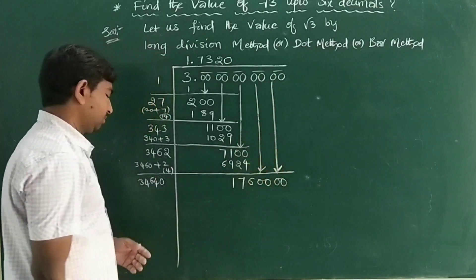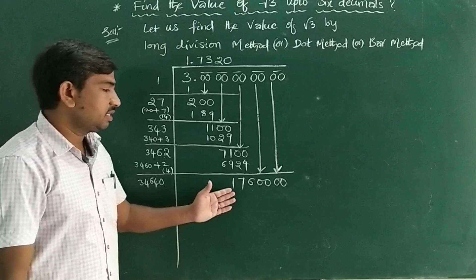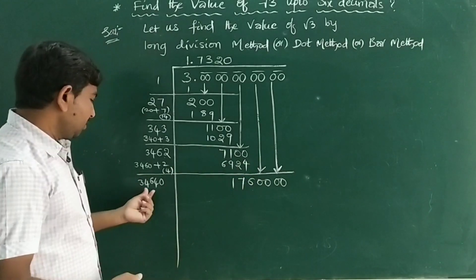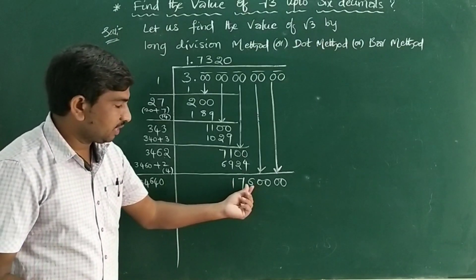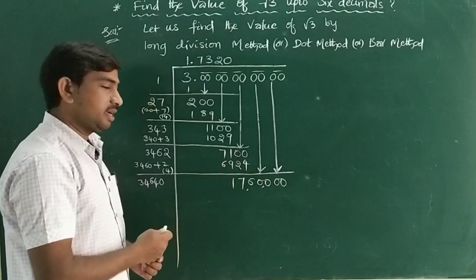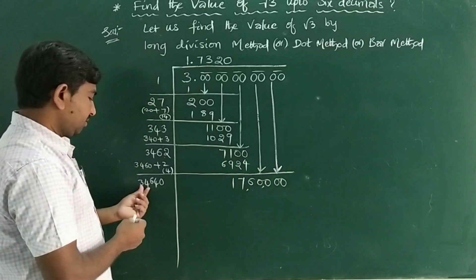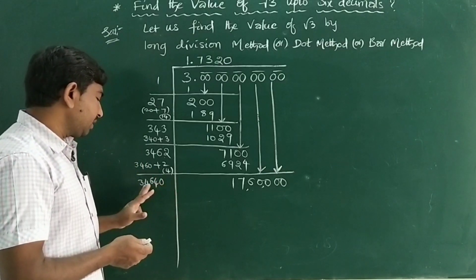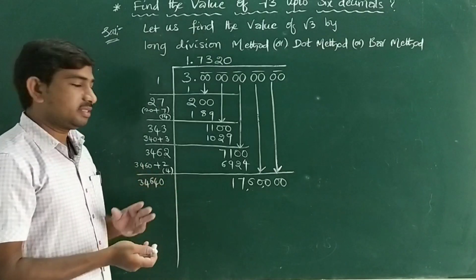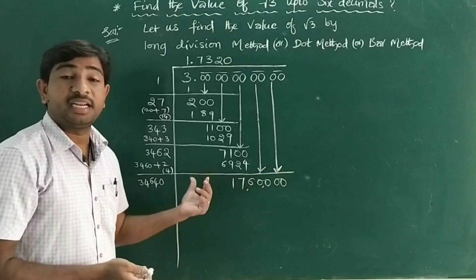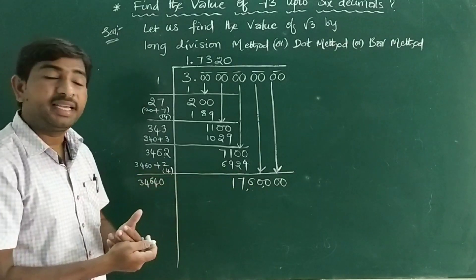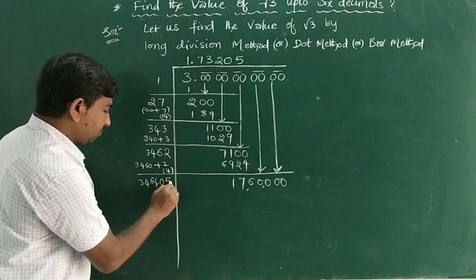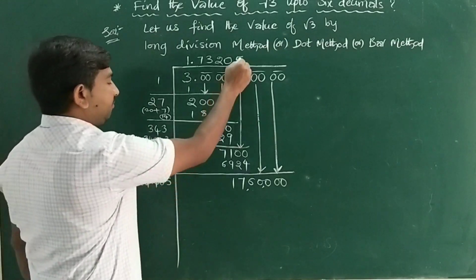Now it becomes 176,000. Here it is 34,640. If you write any number, it becomes 346,000. 3×5 is 15, maybe near 17,000. So multiply with 5. 5×5 is 25, 5×4 is 20 plus 2 is 22, continuing...